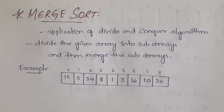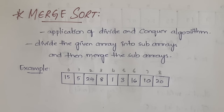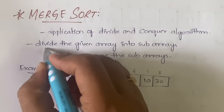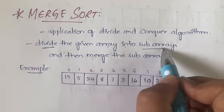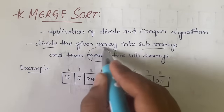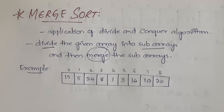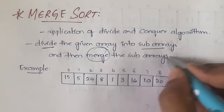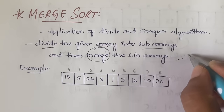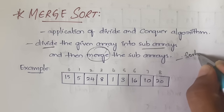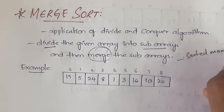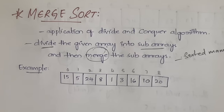Merge sort is an application of the divide and conquer algorithm. You will be dividing an array into a number of subarrays and performing operations on those subarrays. In merge sort, we first divide the given array into subarrays, then merge those subarrays into a new array that will be in sorted order.